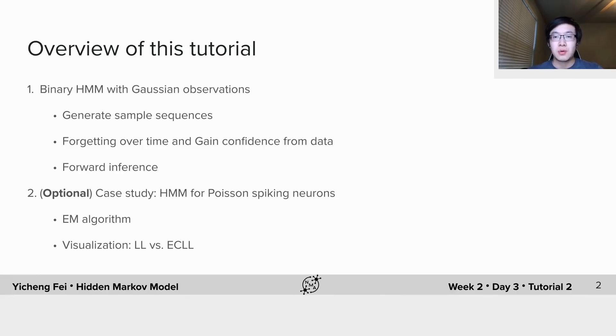In this part, you will go through how to estimate the model parameters from data using the expectation maximization algorithm and visualize how EM algorithm can monotonically increase the data likelihood. Then you will check if the EM algorithm has recovered the true model parameters by visualization.